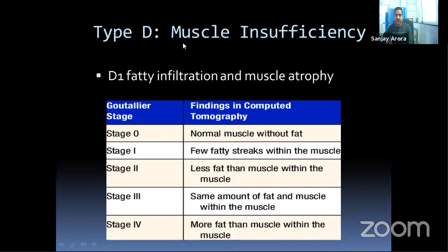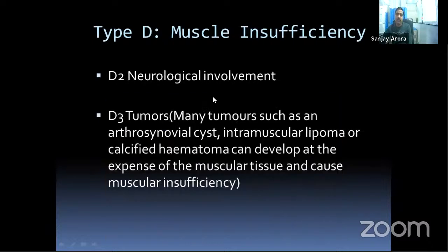At the muscle level, fatty infiltration is classified by Goutallier stages 0–4: Stage 0 — normal muscle; Stage 1 — a few fatty streaks; Stage 2 — less fat than muscle; Stage 3 — equal fat and muscle; Stage 4 — more fat than muscle, indicating worsening prognosis. Type D2 injuries involve neurological involvement such as suprascapular nerve entrapment leading to rotator cuff dysfunction. Type D3 involves tumors — such as arthrosynovial cysts, intramuscular lipomas, or calcified hematomas — developing at the expense of muscle tissue.